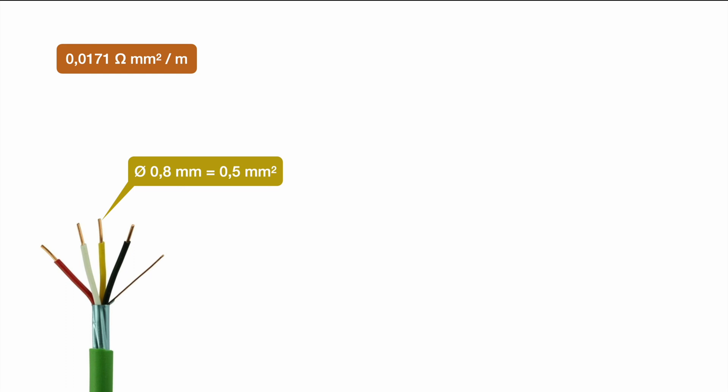In case we want to figure out what's the resistance of one meter of our cable we go ahead with 0.0171 ohm millimeter square per meter and multiply it by one meter and divide it by 0.5 millimeter square, the actual cross-section area of our cable. If you do the math you will end up with a result of 0.0342 ohm because all the other units will just eliminate each other. So that's the resistance of one meter of our cable.